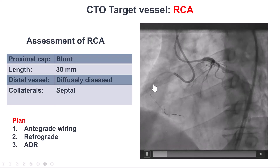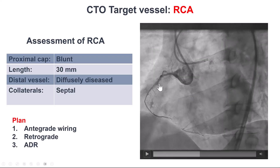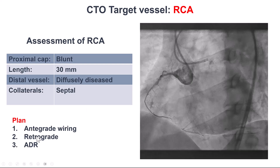To summarize: we have a blunt proximal cap, length about 30 mm, diffusely diseased distal vessel, and septal collaterals to the PDA. Our plan was to try antegrade wiring first; if that didn't work, go retrograde via septals; and if that didn't work, use antegrade dissection and reentry.